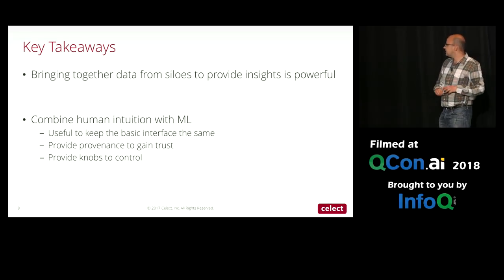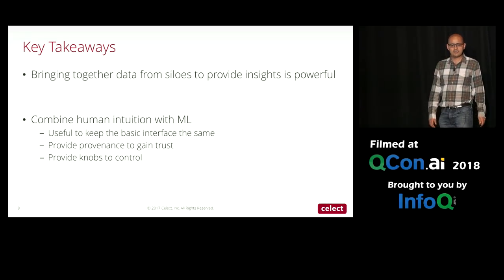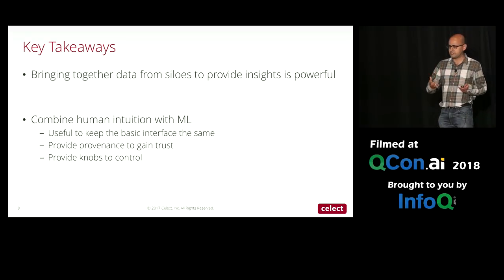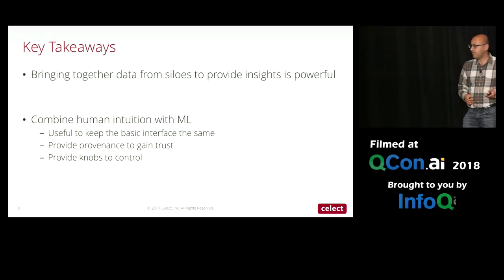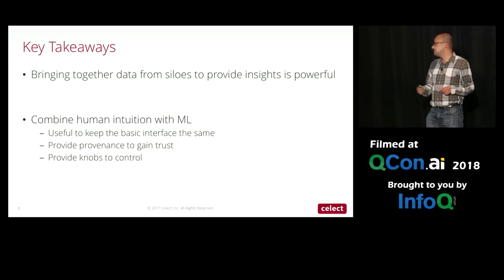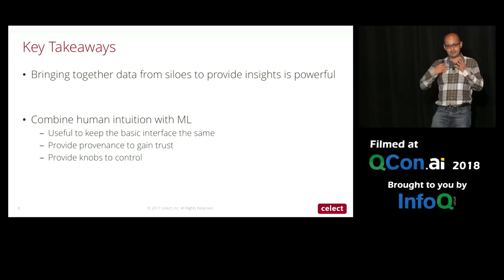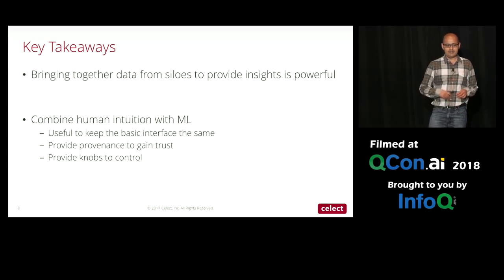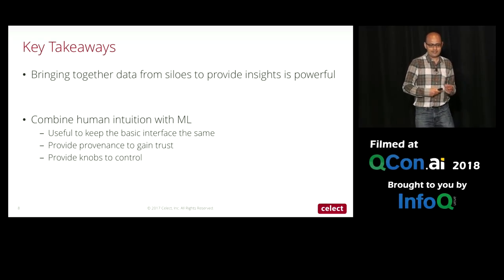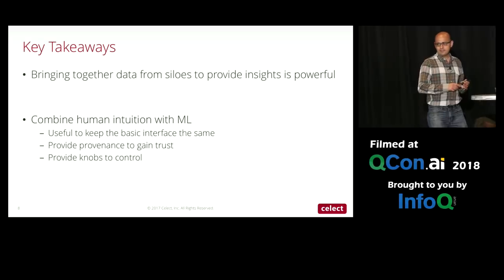The key takeaways are: traditionally retail has mostly worked using siloed data — merchants use different data, e-commerce uses different data, and so on. Bringing all the data together and building a model helps improve predictions. Secondly, with humans in the loop, it's useful to maintain the same interface so they don't have to change the business process, while also providing provenance and some ability to control the process to gain trust. Thank you.